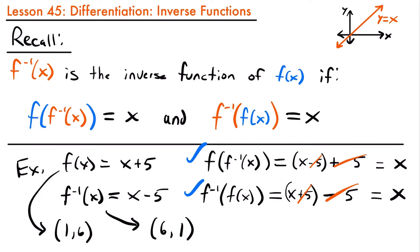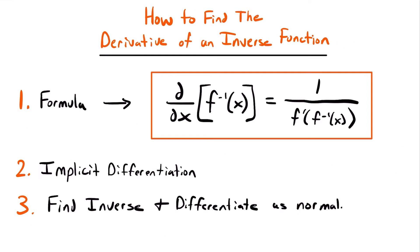That covers the review of inverse functions, and now we're ready to talk about how to find the derivative of them. There are three different methods we can use. The first is to use the formula that most calculus textbooks provide. The second method involves implicit differentiation. The third method is to simply find the inverse function and differentiate it as normal. We're going to look at all three of these methods.